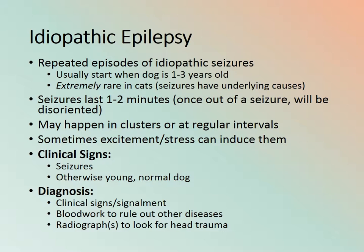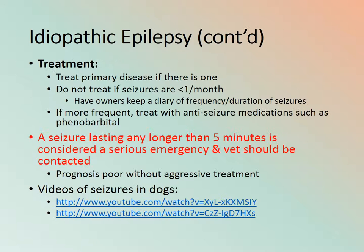Diagnosis is clinical signs, blood work to rule out other diseases, and radiographs to look for head trauma. Treatment: address the primary disease if there is one. If the animal gets less than one seizure a month, you do benign neglect. The owner must keep track of seizures. If they happen more frequently than once a month, anti-seizure medication is required.